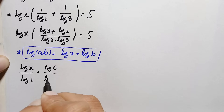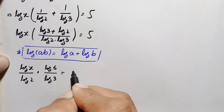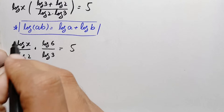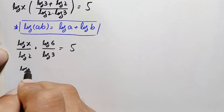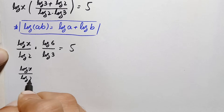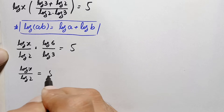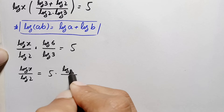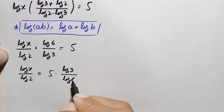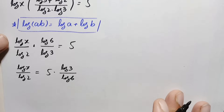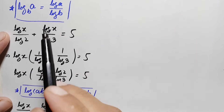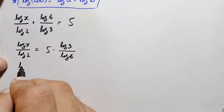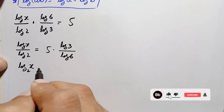We rearrange by moving the denominator to the right hand side. This gives: log of x divided by log of 2, is equal to 5 times log of 3 divided by log of 6. Using the change of base property on both sides, this becomes: log of x with base 2 is equal to 5 times log of 3 with base 6.